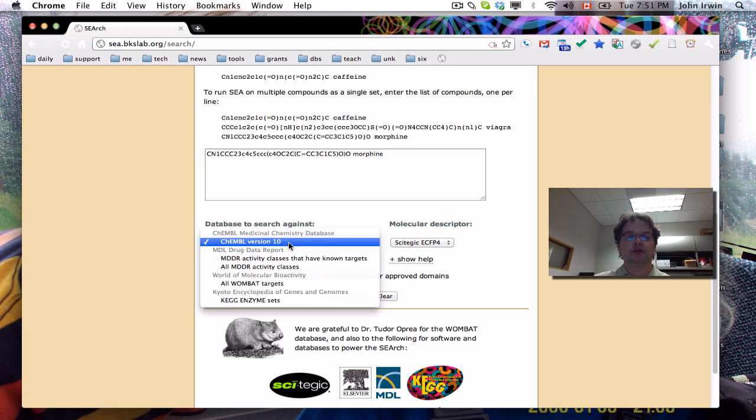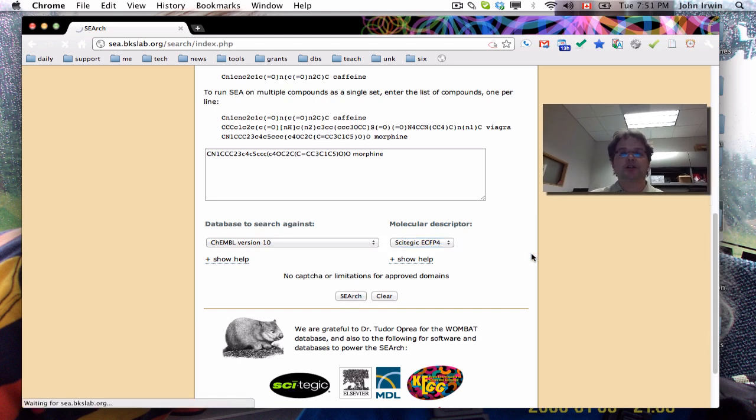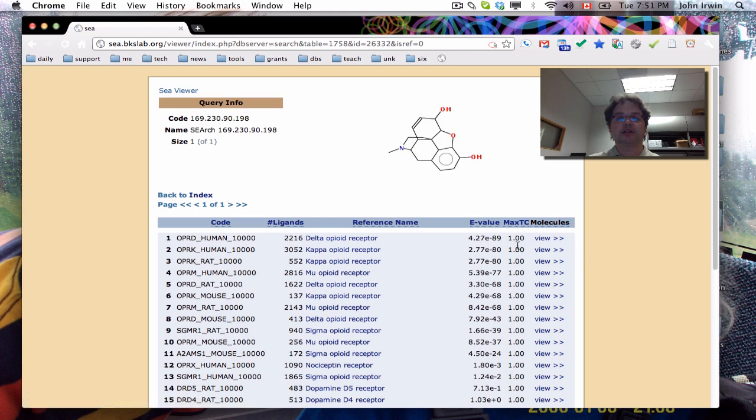And then we're going to search against ChEMBL version 10. We're going to use the SEA strategy because there's no real choice there. And when we do a search, what you'll see is at the top of the page, you're going to see the targets that are annotated. So everything with a max TC of 1 is annotated. These are all targets. So this is the Uniprot code, the target name. And as you can see, there's a lot of repetition. Why is that?